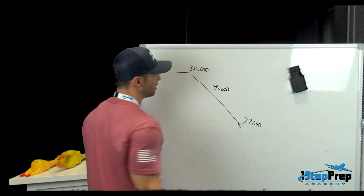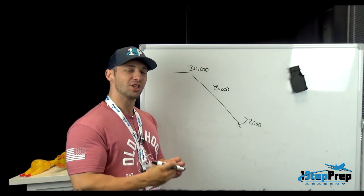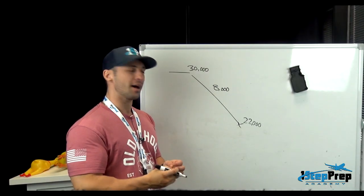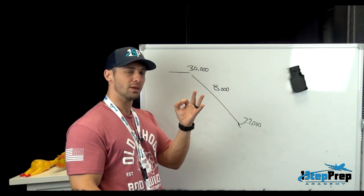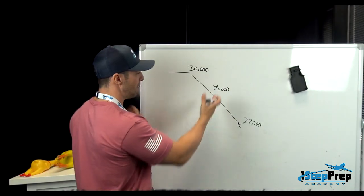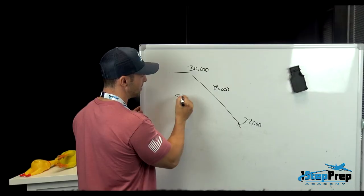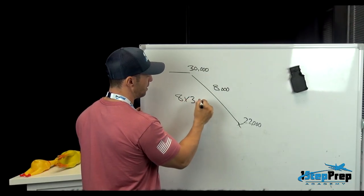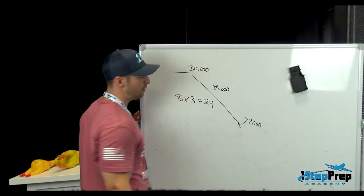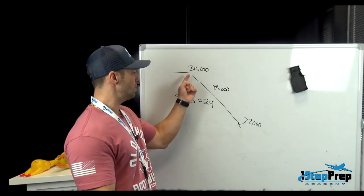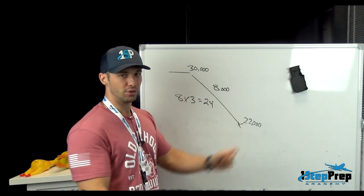I'm probably not sharing anything here that you don't already know, which is 3-to-1 math: altitude to lose times 3. So 8,000 feet to lose divided by 1,000 is 8, and 8 times 3 equals 24. I need 24 nautical miles to descend to meet this altitude constraint.